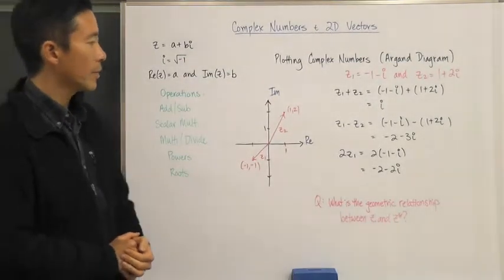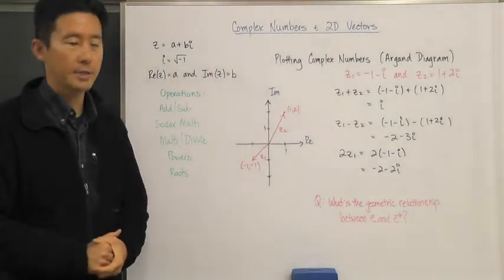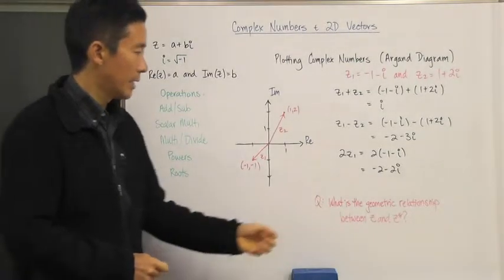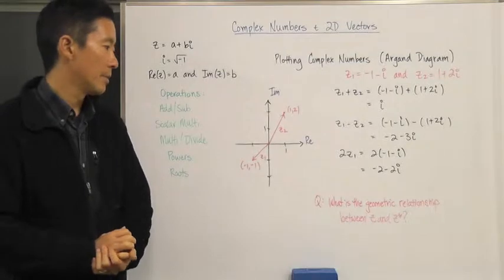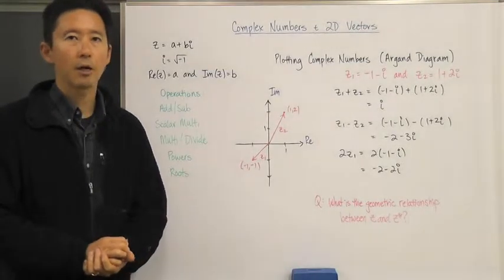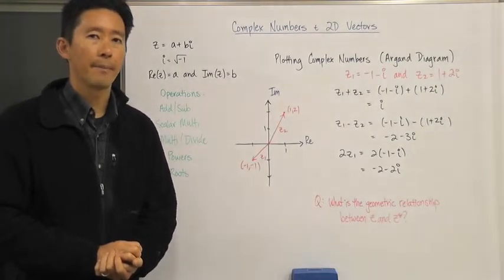So before we end, let's go ahead and ask one last question, and we'll take a look at the answer for this the next time that we meet. What is the geometric relationship or significance between z and z conjugate? We'll take a look at that the next time that we meet. See you next time. Bye bye.